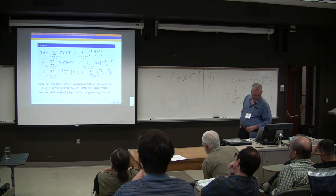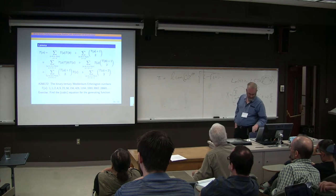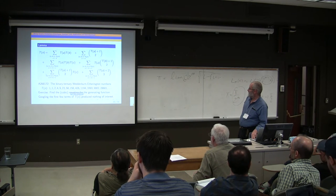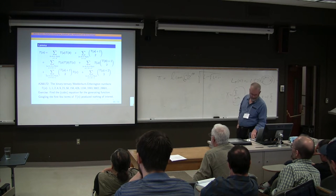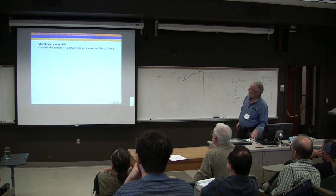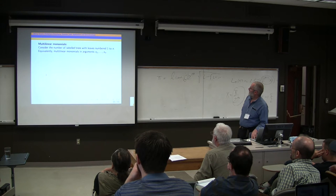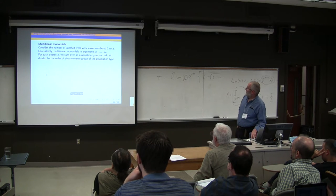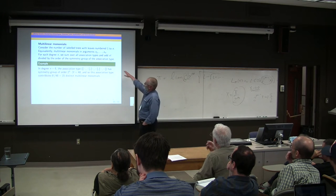And it will be interesting to find the equation for the generating function. That shouldn't be too difficult, but I haven't done it yet. And this is the sequence that produced nothing of interest when I Googled it. On the other hand, look at the labeled trees with leaves numbered one to n. And so here's an example of what I mean by the symmetries of the association.